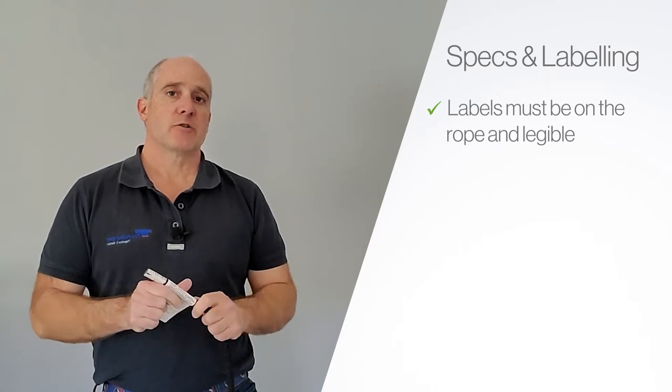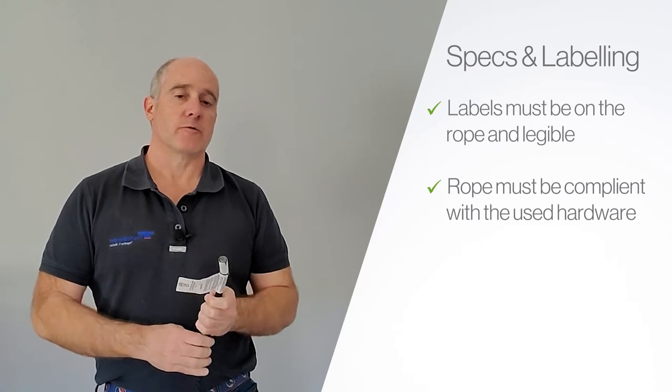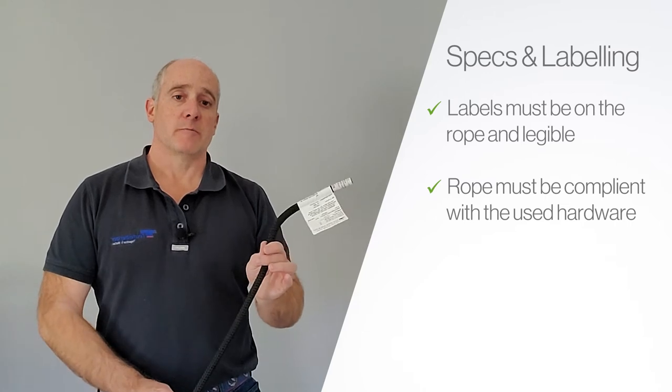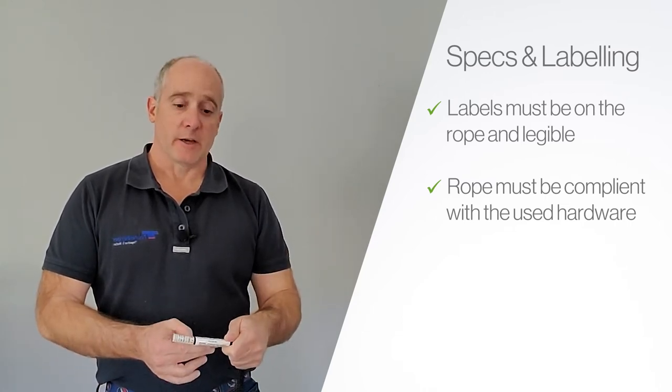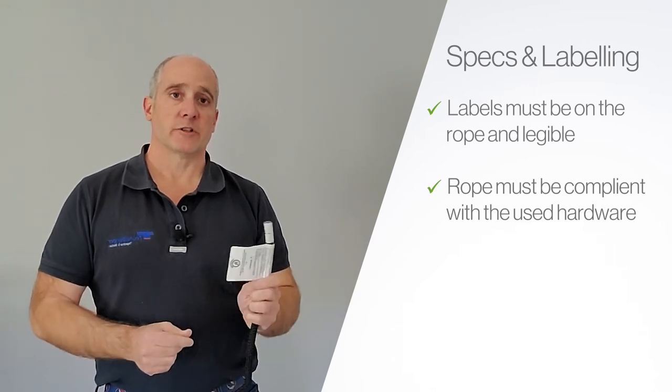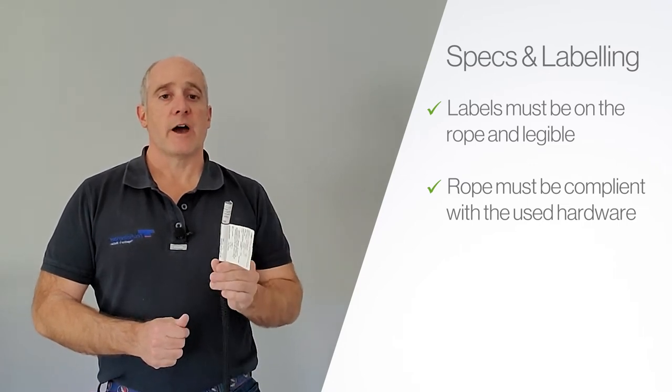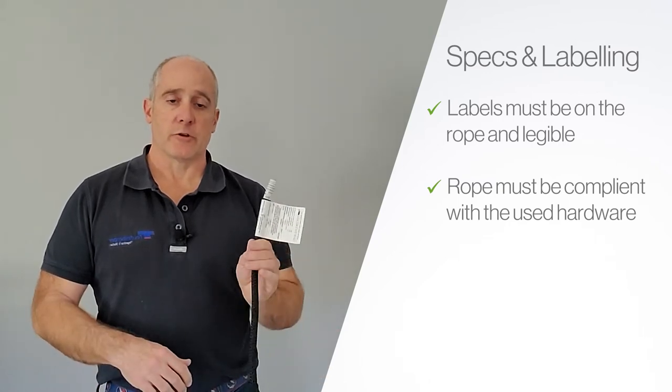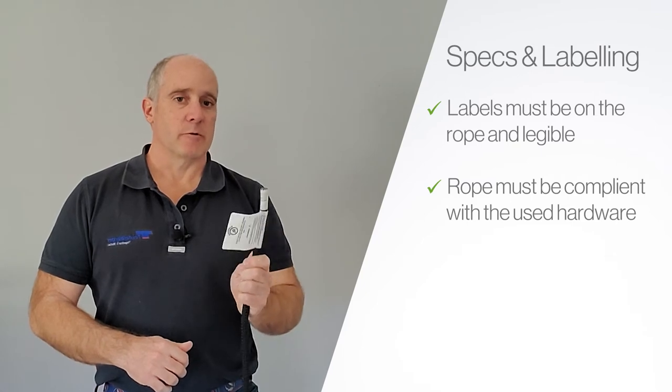The second thing is to make sure that the rope is compliant with the hardware you're about to use. So if you're using a piece of hardware that requires an 11 mil kern mantle, you need to make sure you have an 11 mil kern mantle. You do that by reading the end band label. If you need a half inch rope, just make sure that the label is compliant with what you're about to use and meets the recommendations of that hardware manufacturer. They vary dramatically, so make sure that your hardware will work with the rope you're about to use every single time you use it.